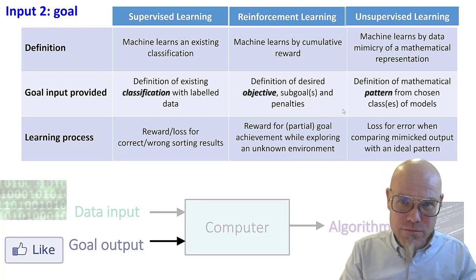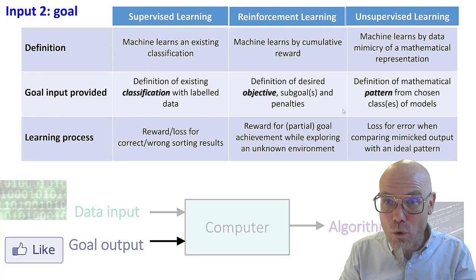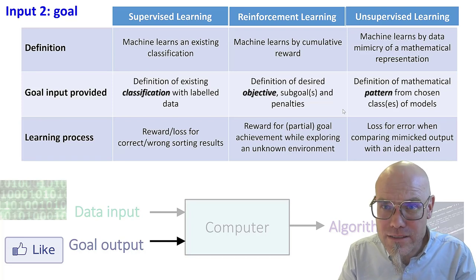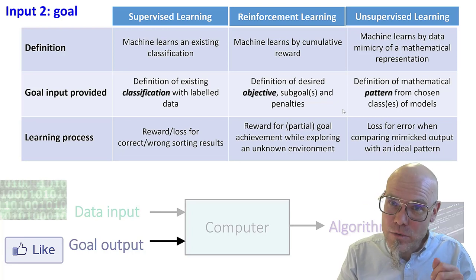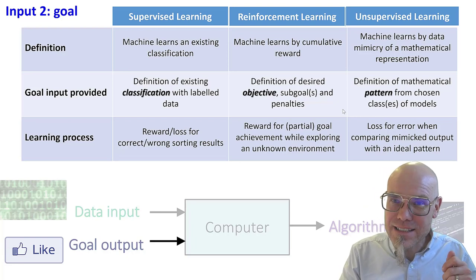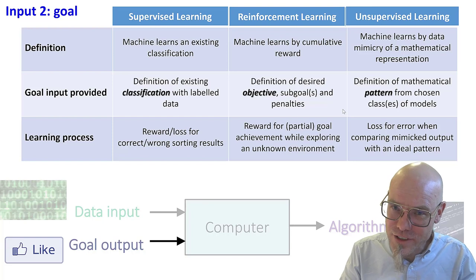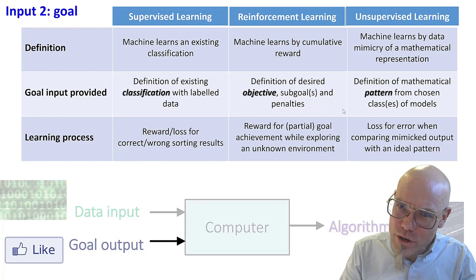Reinforcement learning. We give the machine just an objective, a goal. We say gain points or make the world a better place and then give good advice.